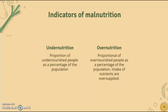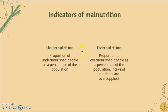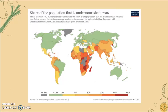Indicators of malnutrition: under-nutrition is the proportion of undernourished people as a percentage of the population, whereas over-nutrition is represented by the proportion of over-nourished people as a percentage of the population. In over-nutrition, the intake of nutrients is in oversupply. Both are incidents of malnutrition — one is under and one is over.